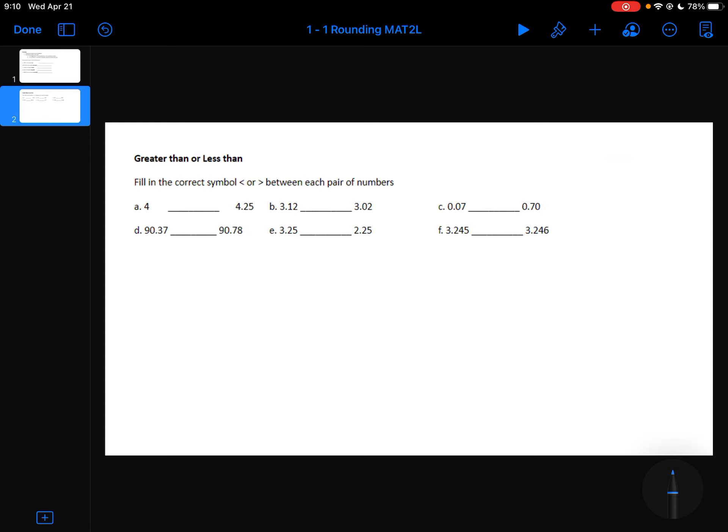The other thing that you should be able to do is identify numbers as greater than or less than. So what we're going to do here is fill in the correct symbol. So this one is less than. This one is greater than. And we're going to fill it in between each pair of numbers. So 4 is less than 4.25.